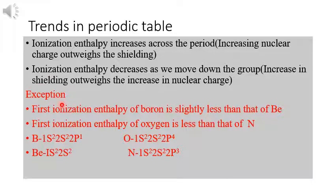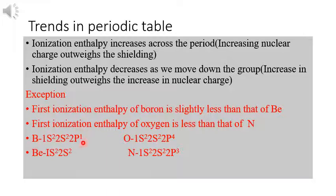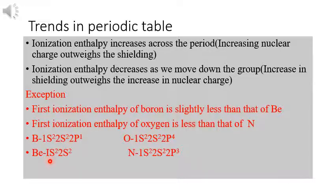There are some exceptions. Boron has the configuration 1s², 2s², 2p¹ and beryllium is 1s², 2s². According to the general trend, ionization enthalpy should be higher for boron than beryllium, but it is actually slightly less. This is because boron's last electron is in the 2p orbital, while beryllium's last electron is in the 2s orbital. The s orbital has more penetrating power than the p orbital, and beryllium's 2s subshell is fully filled — making it harder to remove an electron from beryllium.